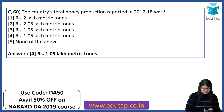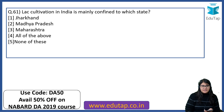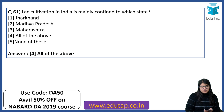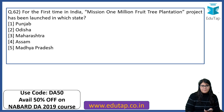Lac cultivation in India is mainly confined to which states? This is important. The answer is all of the above — Jharkhand, Madhya Pradesh and Maharashtra. For the first time in India, Mission 1 Million Fruit Tree Plantation Project has been launched in which state? The right answer is Odisha.